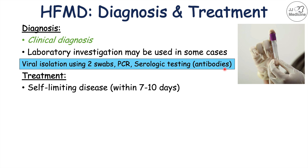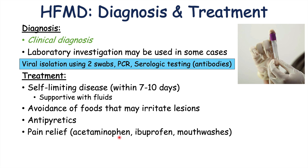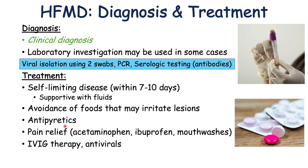Treatment of this condition is often supportive. It's a self-limiting disease in most cases and resolves on its own within 7 to 10 days. Supportive treatment includes giving the patient lots of fluids, and avoidance of foods that may irritate the lesions — such as very hard, very spicy, or other irritating foods. Patients often do well with soft, pureed foods while they have lesions in the mouth. Antipyretics are important to reduce fever, and pain relief with acetaminophen, ibuprofen, and mouthwashes can help with painful oral lesions. In more severe cases, IVIG therapy has been used, and certain antiviral medications have been used to treat enterovirus 71 because of its severity.